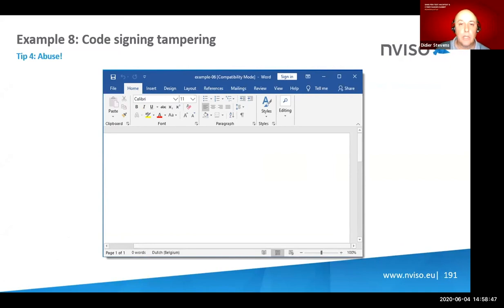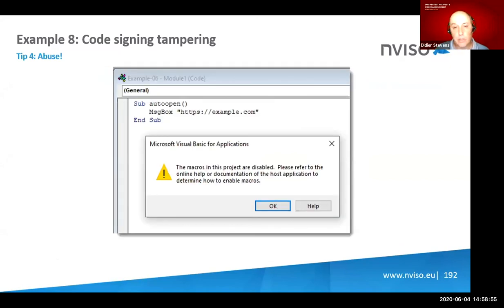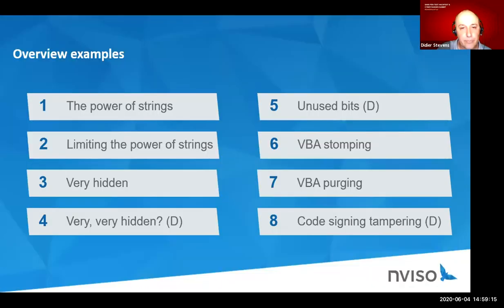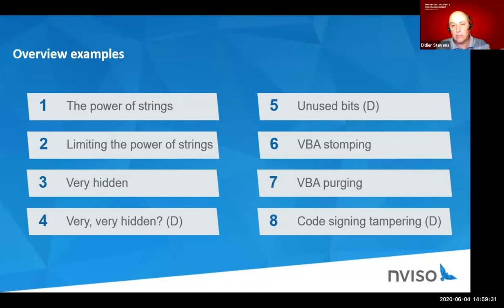In the altered document, the source code still shows 'MsgBox Hello' — still signed — but I've replaced the compiled code (not taken into account for the signature) with code that launches Calculator instead. When you open it, you get the yellow banner. With Office settings requiring only signed code, enabling it launches Calculator. For reference, if you open the document in Word, nothing executes even if forced — you get a warning. This illustrates that reading the documentation can lead to very interesting discoveries.